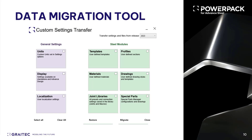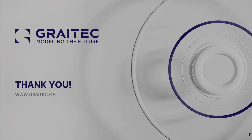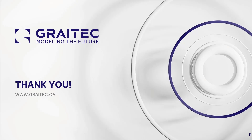A data migration tool has been introduced in this version in order to bring key information across from one PowerPak version to the next. This handles only information strictly controlled by the PowerPak, but touches on areas such as joint libraries, special parts manager, profiles, materials, and more. Hope the presentation has been helpful — thank you for taking the time to watch and have a great day.